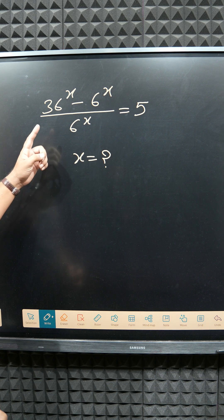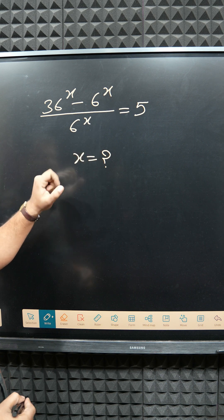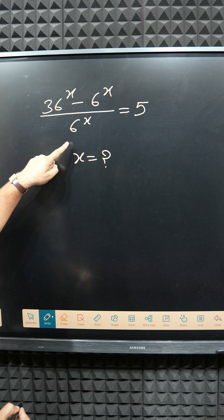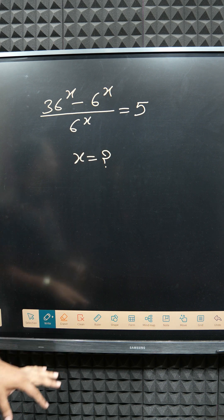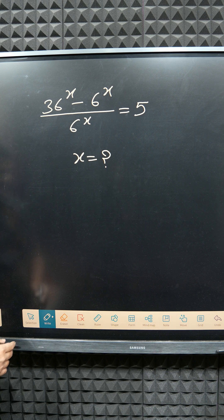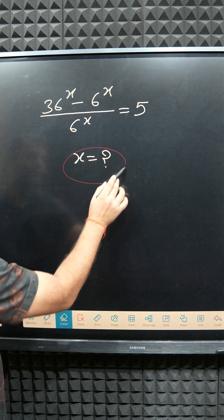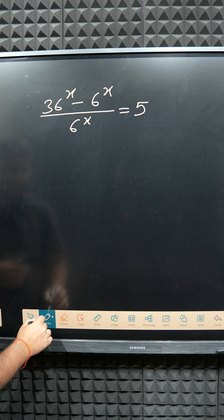Okay, the question is 36 to the power x minus 6 to the power x divided by 6 to the power x equals 5. Then what about x? Everyone can try, then after that I will do. Okay, this question is very simple.